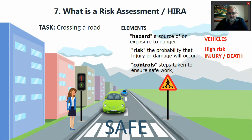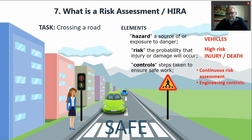Now, the controls that were put in place to make sure that you can do it safely. Firstly, there is a continuous risk assessment — you stood on the side of the road looking left and right until it was safe, and then you started crossing. You put engineering controls in place: there was the robot and the crossings. You have even put signage in place stating where it is safe to cross.